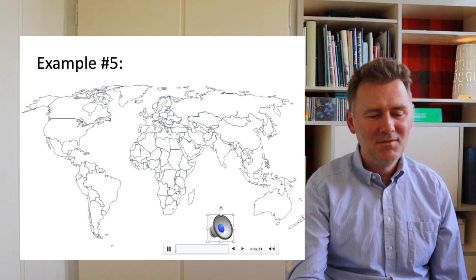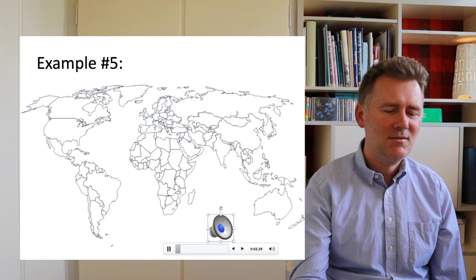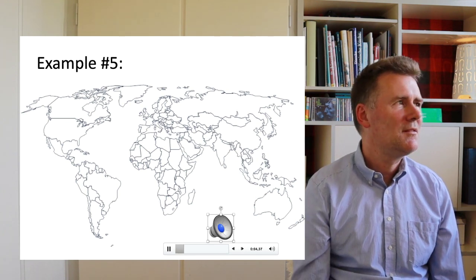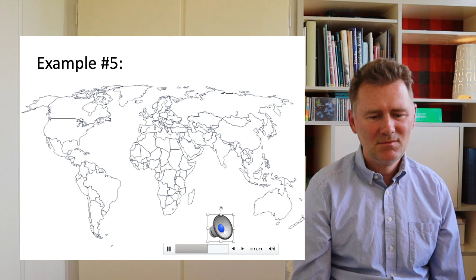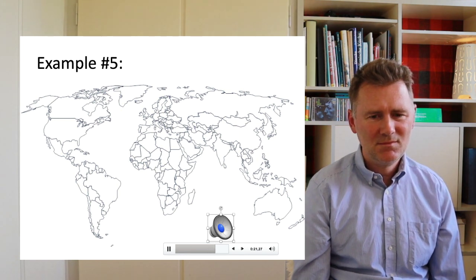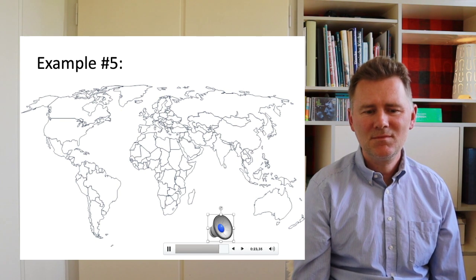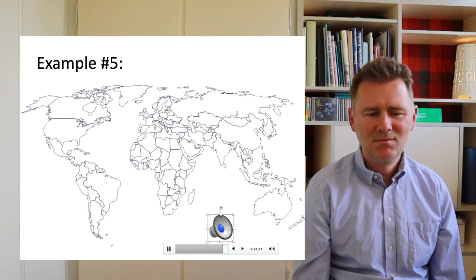Number five: 'The palpitation might increase. Tension might get built up. Do nothing. Just observe it. Just accept the fact that there is anger which has arisen in my mind at this moment. And look, there is heat in my body, or the palpitation has increased, or there is tension, whatever it is. Just observe that and accept the fact that my mind is at present full of this particular negativity.'